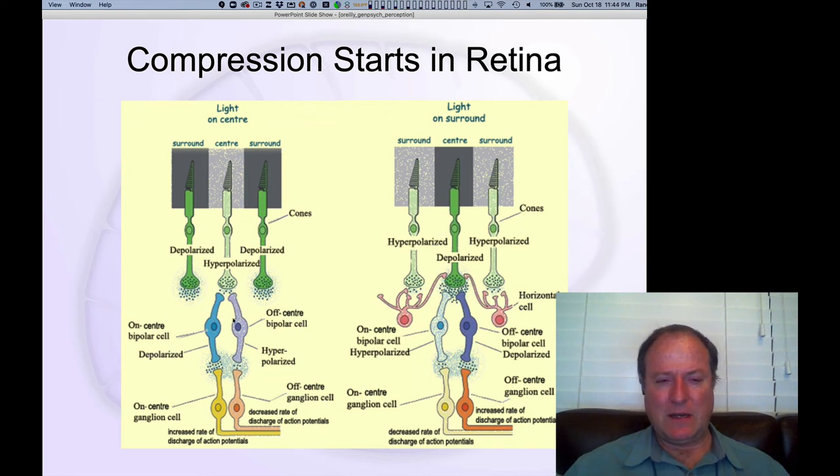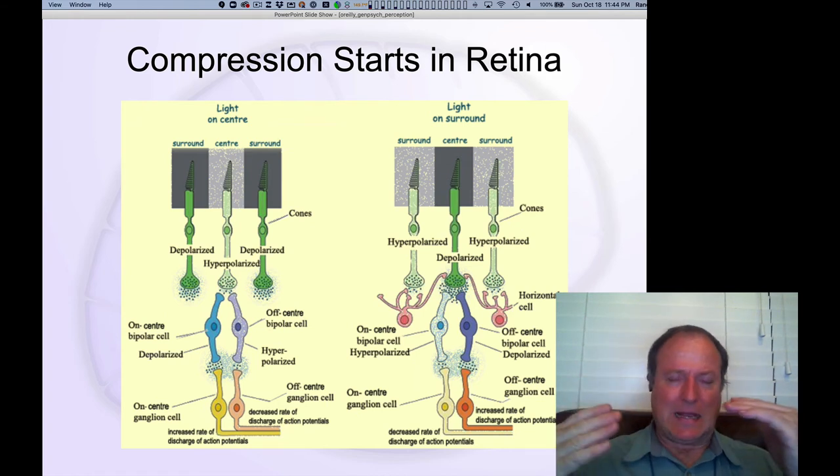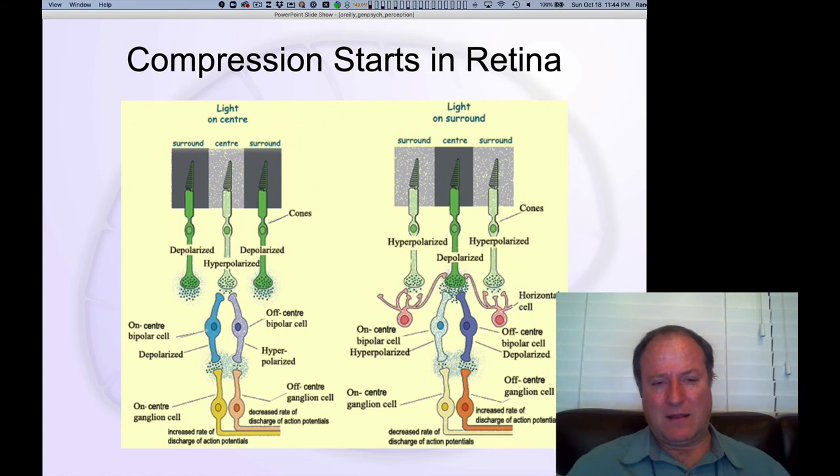You have these different layers of bipolar cells that have different types of connectivity. One of the weird things about the cones and the rods is that light actually inhibits them - they're always firing, and when the light comes in it actually turns them off instead of turning them on. So you have to flip the sign on everything.